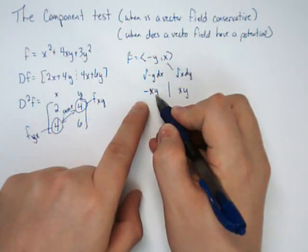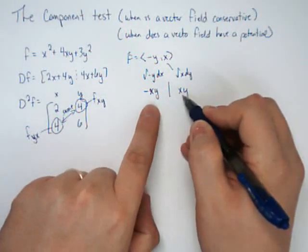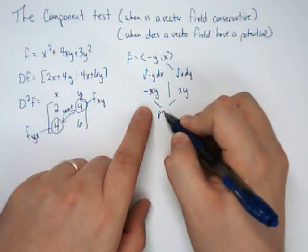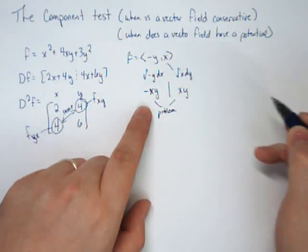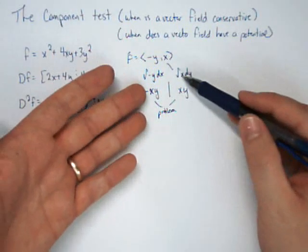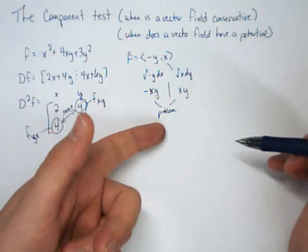We have a negative xy over here, but we have a positive xy over here. Those disagree, which means there's a problem. Does that mean there is no potential? Well, not necessarily. It just means that our method of finding the potential has come to a problem.